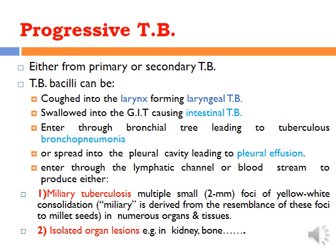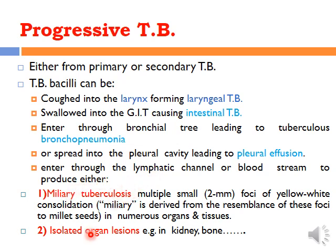Progressive TB can arise from either primary or secondary TB. TB bacilli can be coughed up and enter the larynx, forming laryngeal TB, or swallowed through the GIT producing intestinal tuberculosis, or enter the bronchial tree producing bronchopneumonia, or enter the pleural cavity producing pleural effusion. They may also break through lymphatic channels or the bloodstream, producing miliary tuberculosis or TB of specific organs such as the kidney.